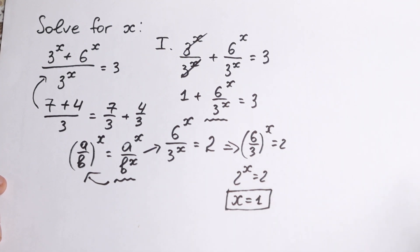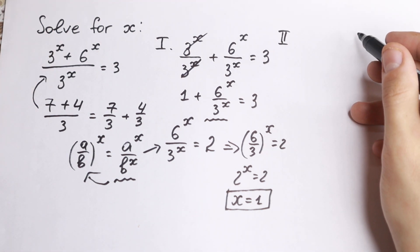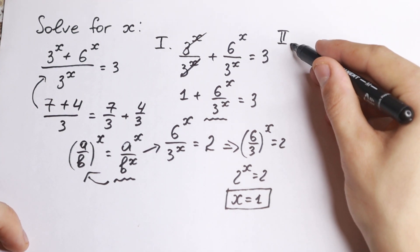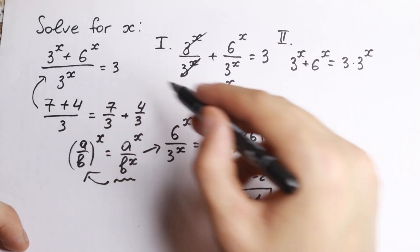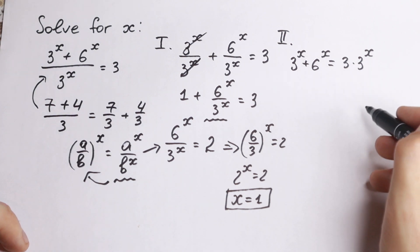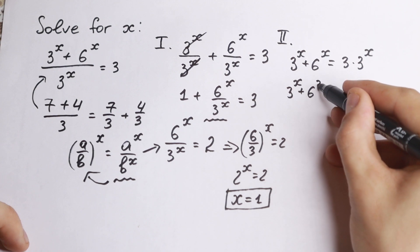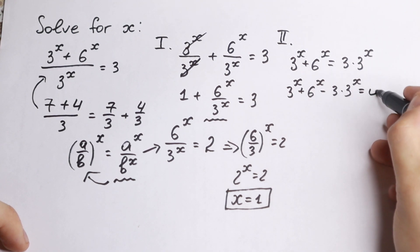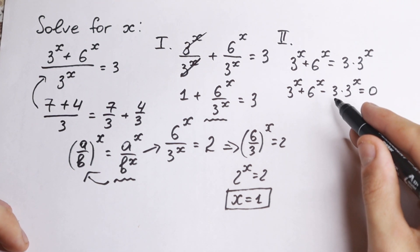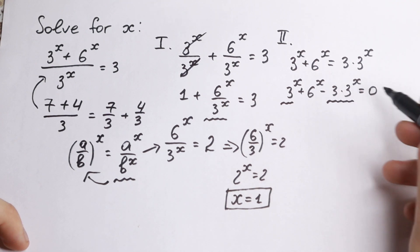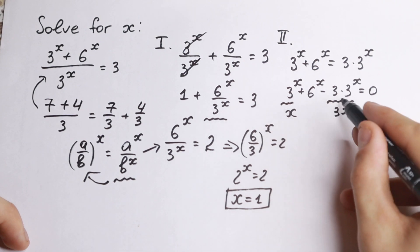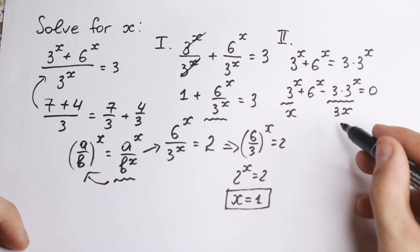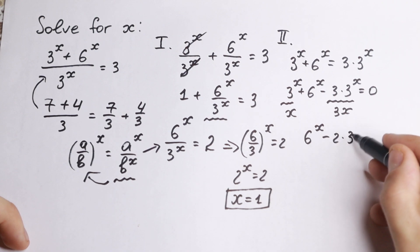That was the first method. Now let me show you the second method — in case you didn't remember that property. We have a division, so we can use cross-multiplication. Multiplying gives us 3 to the x plus 6 to the x equal to 3 times 3 to the x. Bringing all elements to the left: 3 to the x plus 6 to the x minus 3 times 3 to the x equal to 0. We have 3 to the x minus 3 times 3 to the x, which is like x minus 3x giving minus 2x, so with x equal to 3 to the x we get 6 to the x minus 2 times 3 to the x equal to 0.